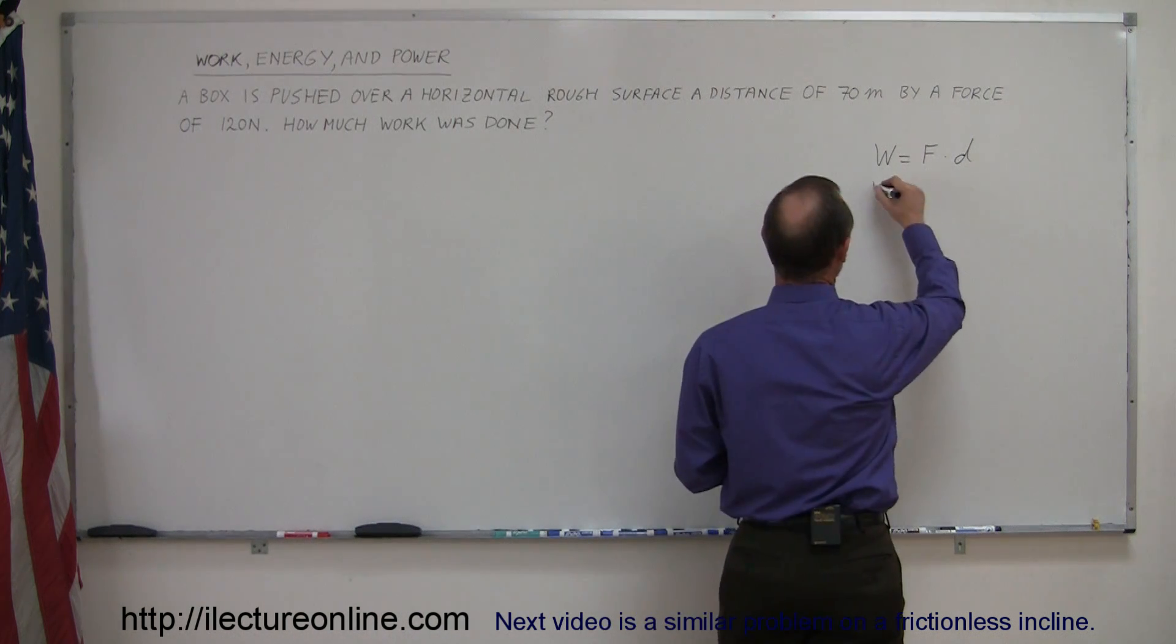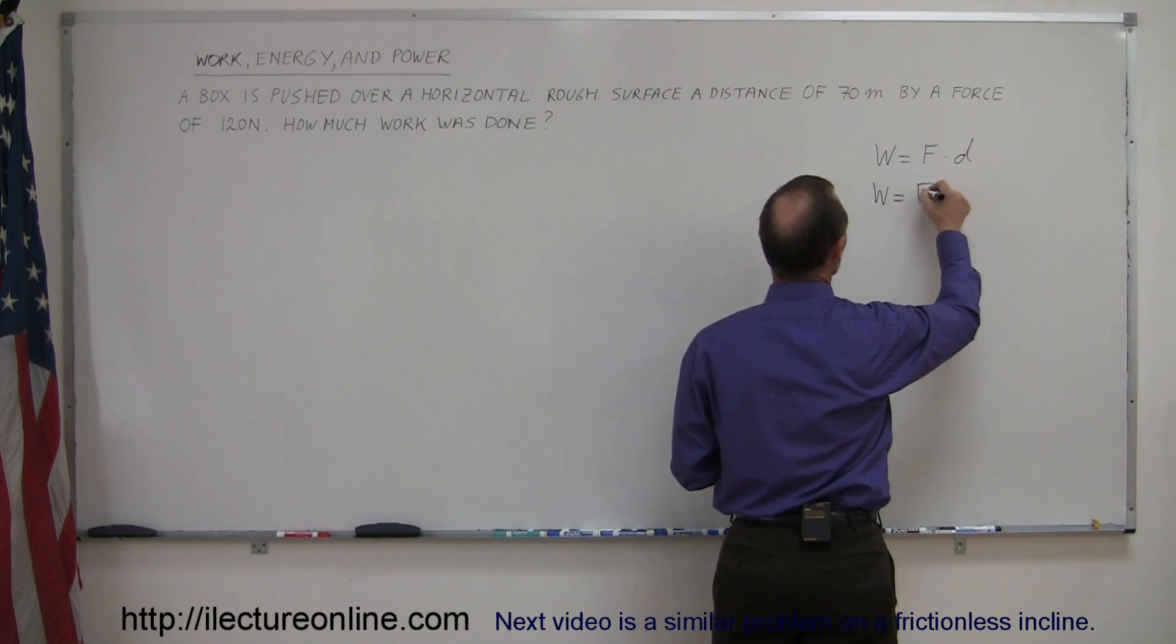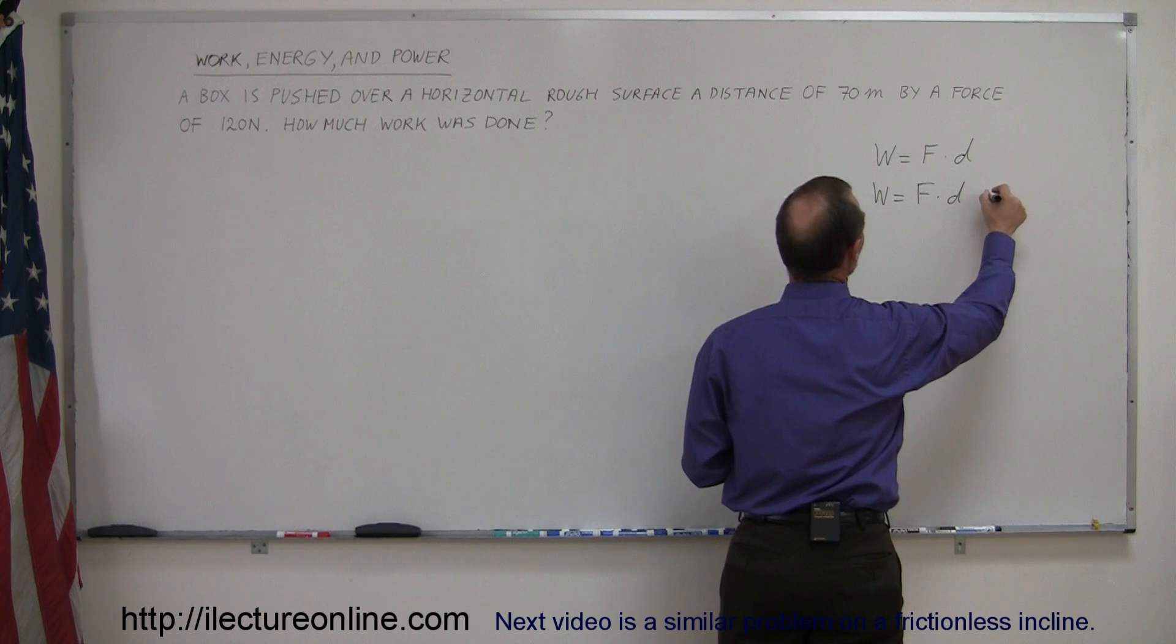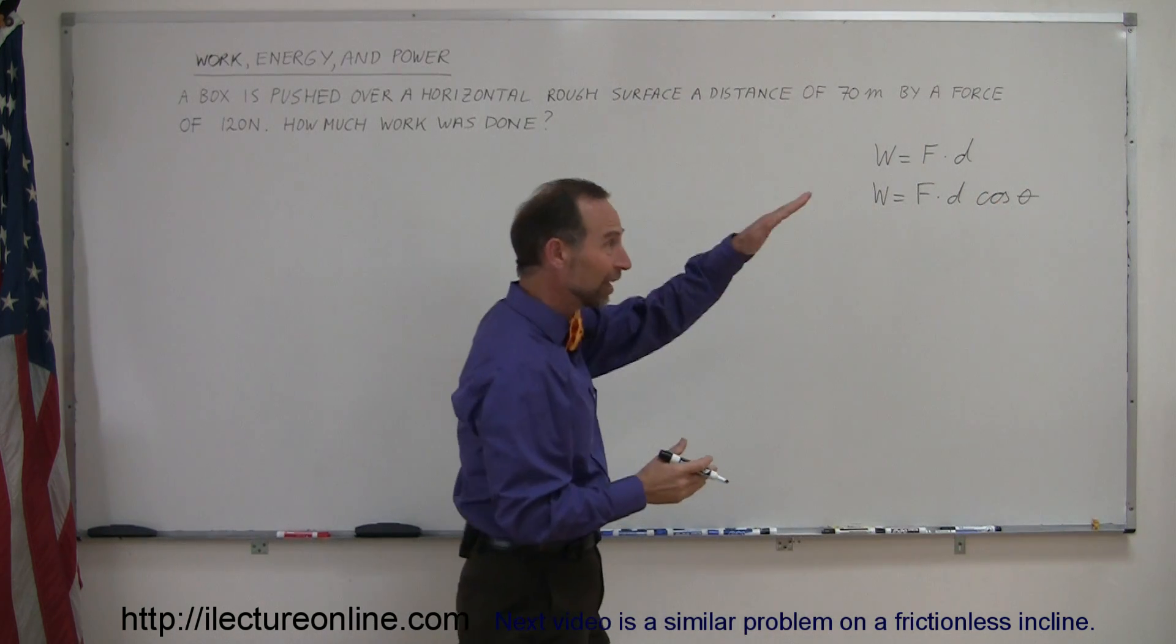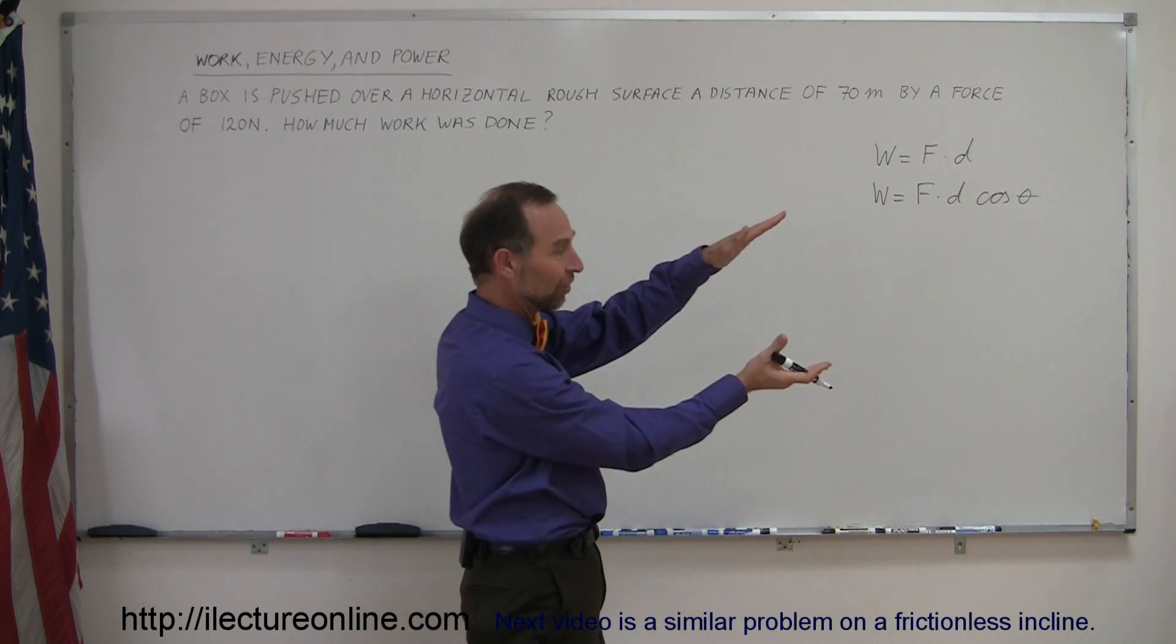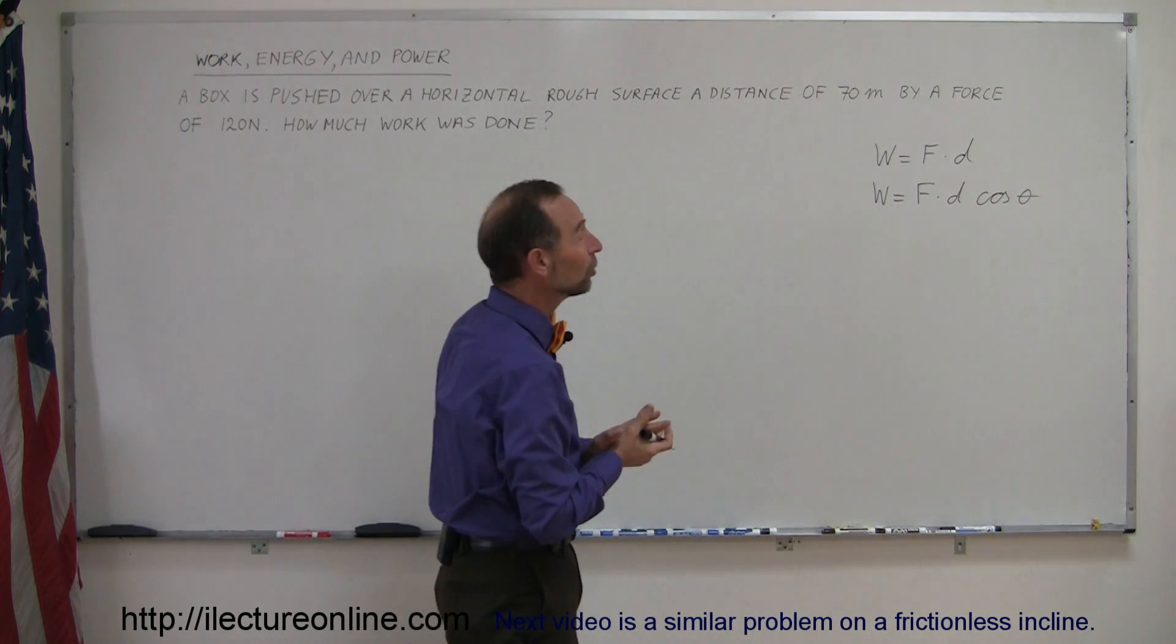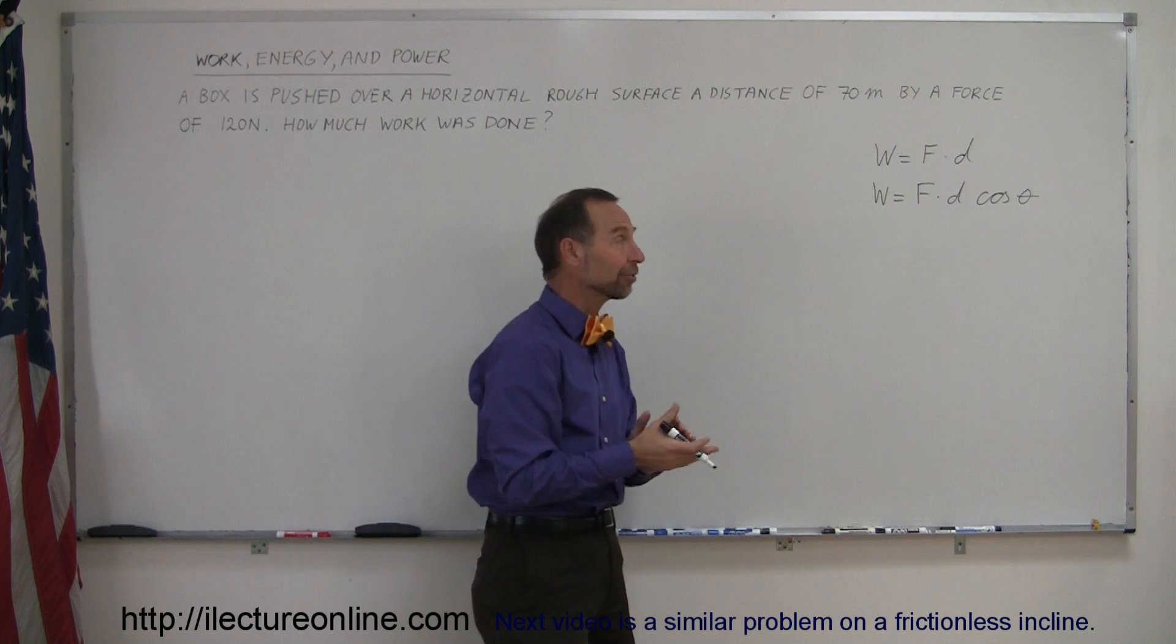If it's not, we need to write that the work done is equal to the force times the distance times the cosine of the angle between the two. In other words, if the force is pushing in one direction and the displacement or distance covered is in another direction, there's an angle between the two, then we have to also account for that.